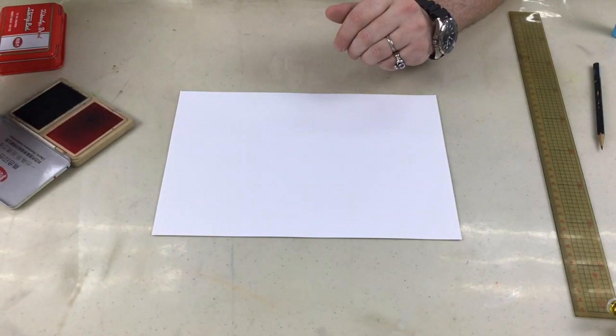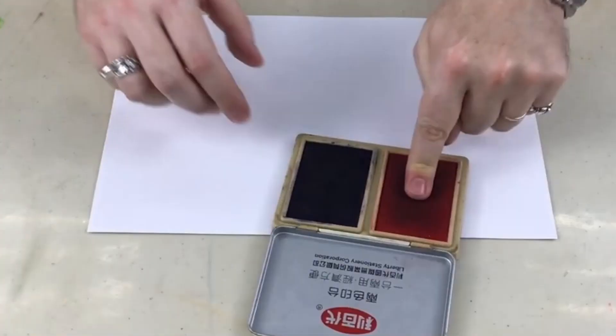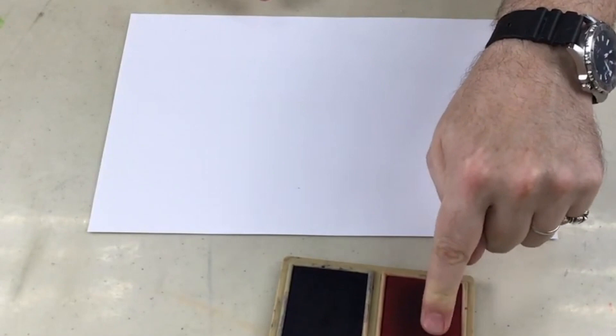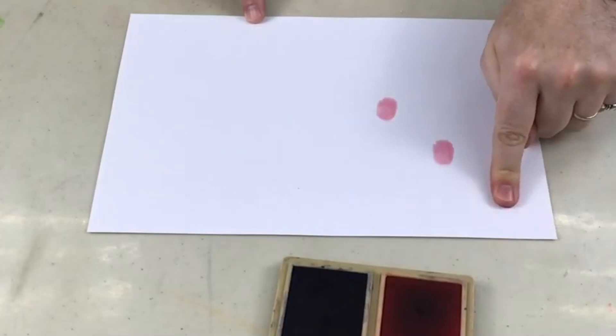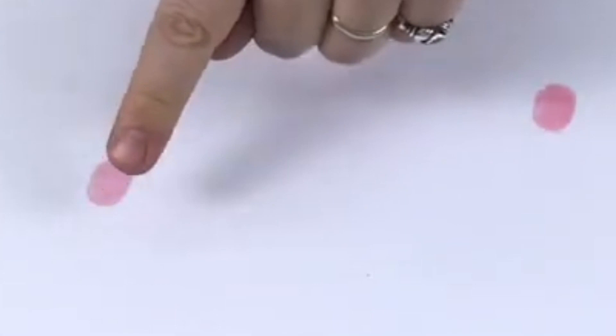So I'm going to open the stamp pad. I'm going to use my finger and I'm just going to put it on the paper. There we go. One fingerprint. Two fingerprints. I'm going to make a few. One over here. Two together. Three together. Four together.